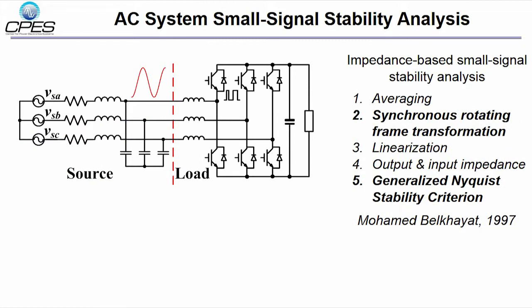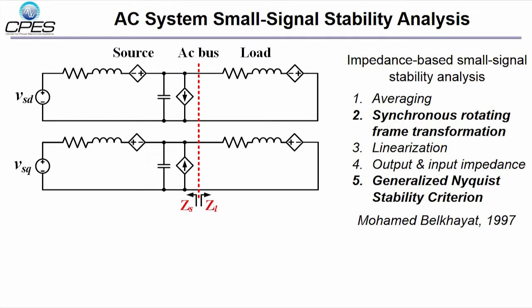First, due to the time-varying and periodic nature of AC systems, synchronous rotating frame transformation should be applied so that linearization can be done around an equilibrium point. In DQ frame, three-phase AC systems become two coupled DC systems, different from DC-DC converters.